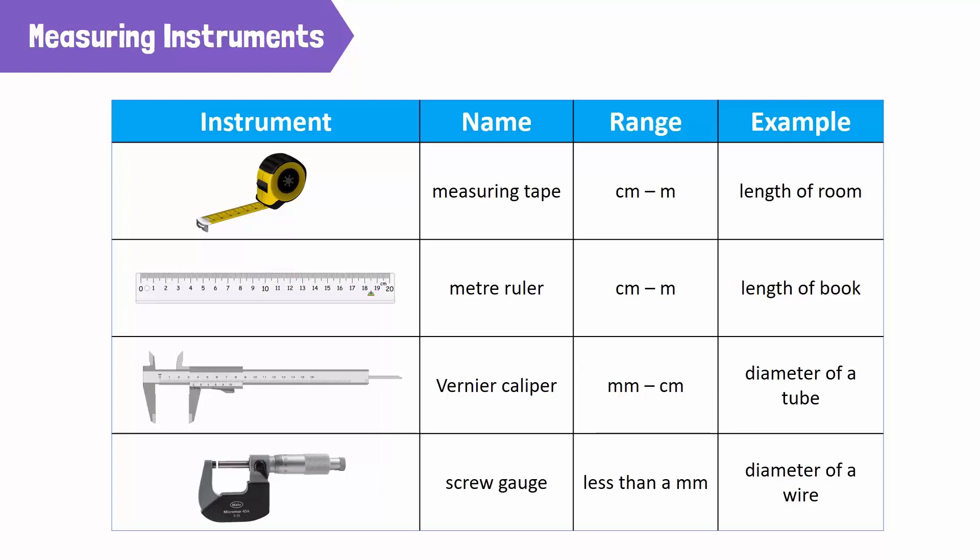A vernier caliper is used for objects between one millimeter and one centimeter. Finally, a screw gauge can be used for objects smaller than a millimeter, such as wires.